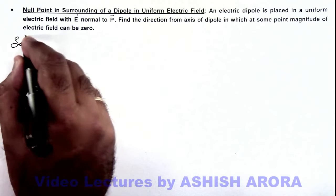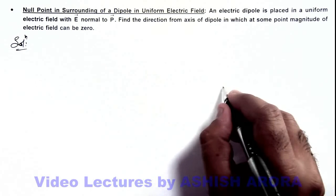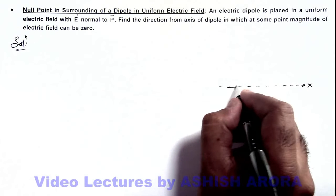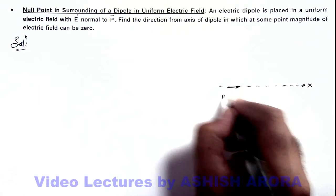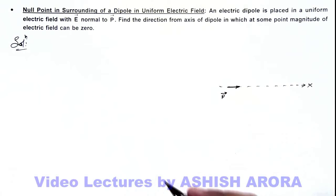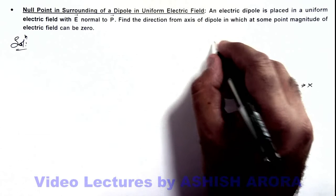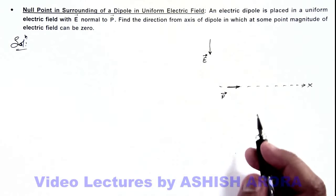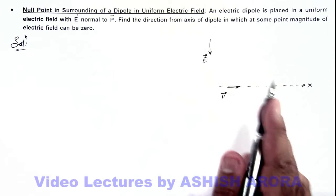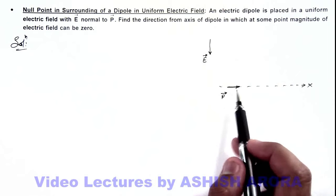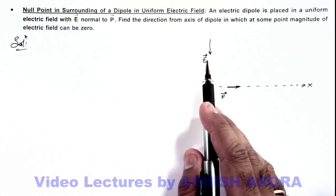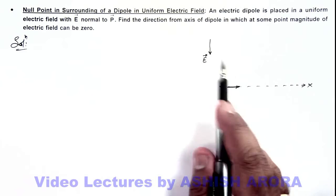In the solution, we first draw the situation. Say this line is the axis of the dipole — the x-axis. We place a dipole having electric dipole moment P vector. In this situation, we assume the electric field is normal to P vector and is in the downward direction. In the surrounding, at all those points where the electric field due to the dipole is exactly opposite to this E vector and equal in magnitude, the net electric field will become zero.